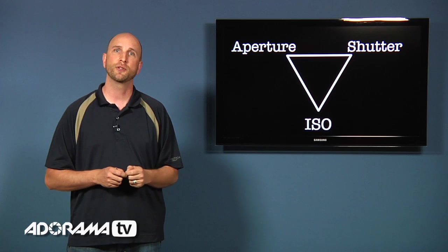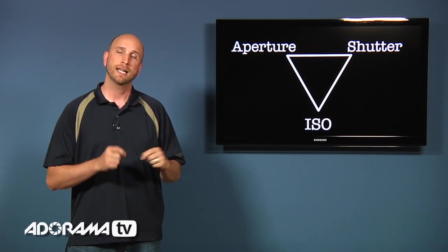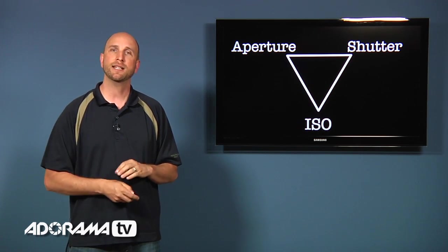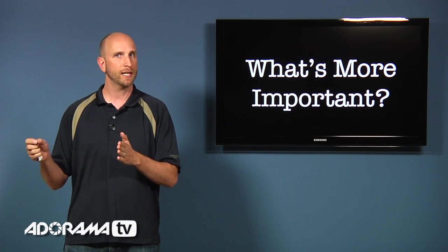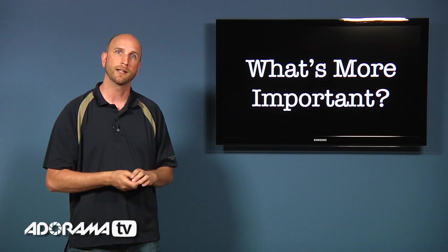Well now that shows us that we have three things that work together to control exposure. Aperture, shutter and ISO. Now you might be asking yourself what's more important to set your camera's shutter speed to a certain setting or your camera's aperture value to a certain setting. Well it really depends on what you're shooting.